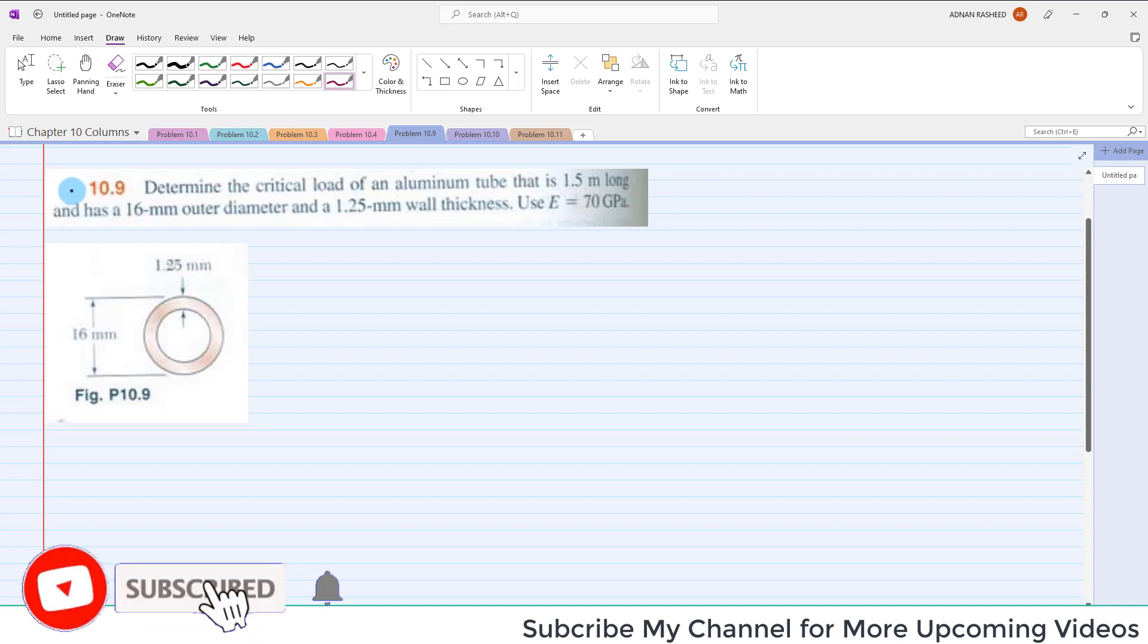Problem 10.9. It is given to determine the critical load of an aluminum tube that is 1.5 meters long and has 16 millimeter outer diameter and 1.25 millimeter wall thickness. Use E equals 70 gigapascals.